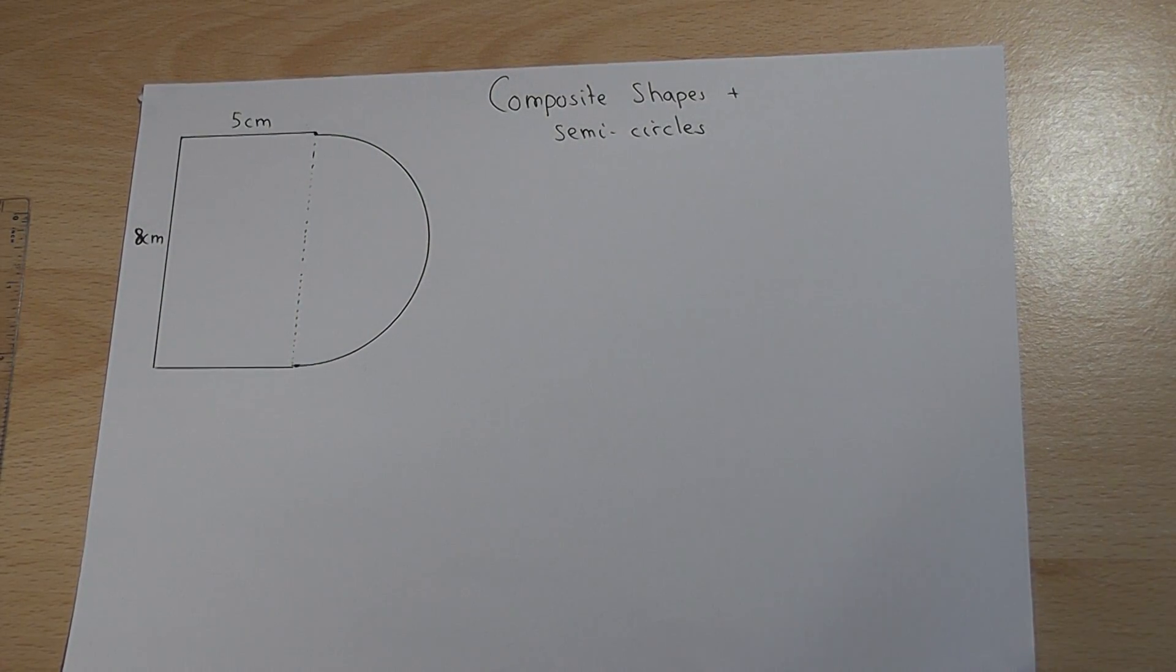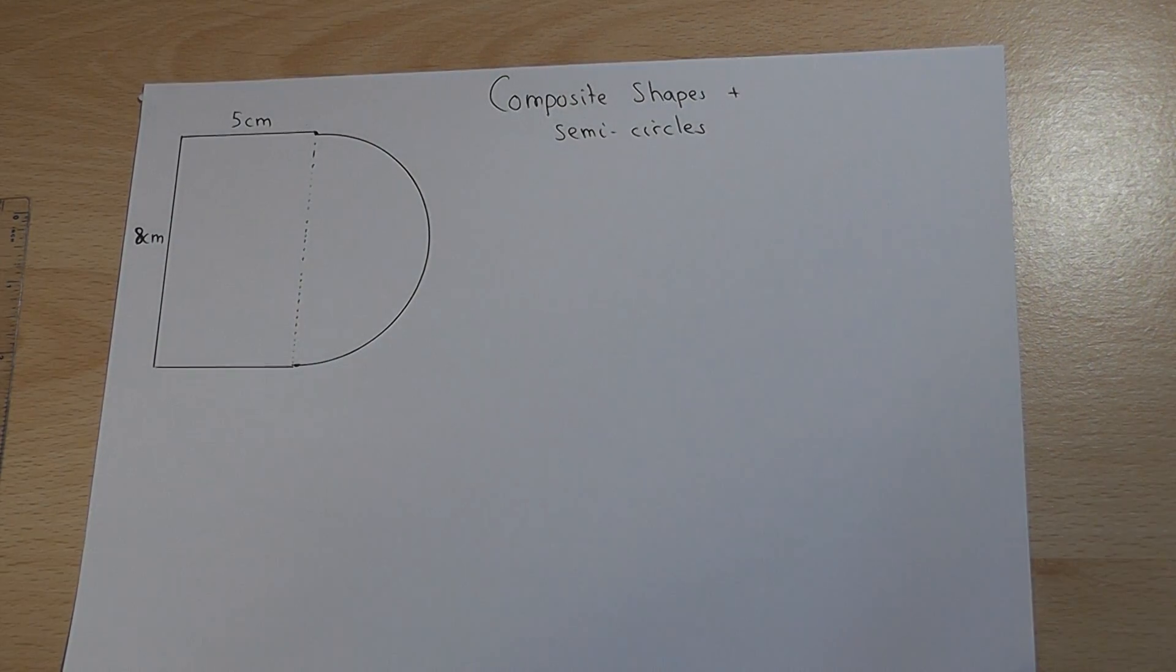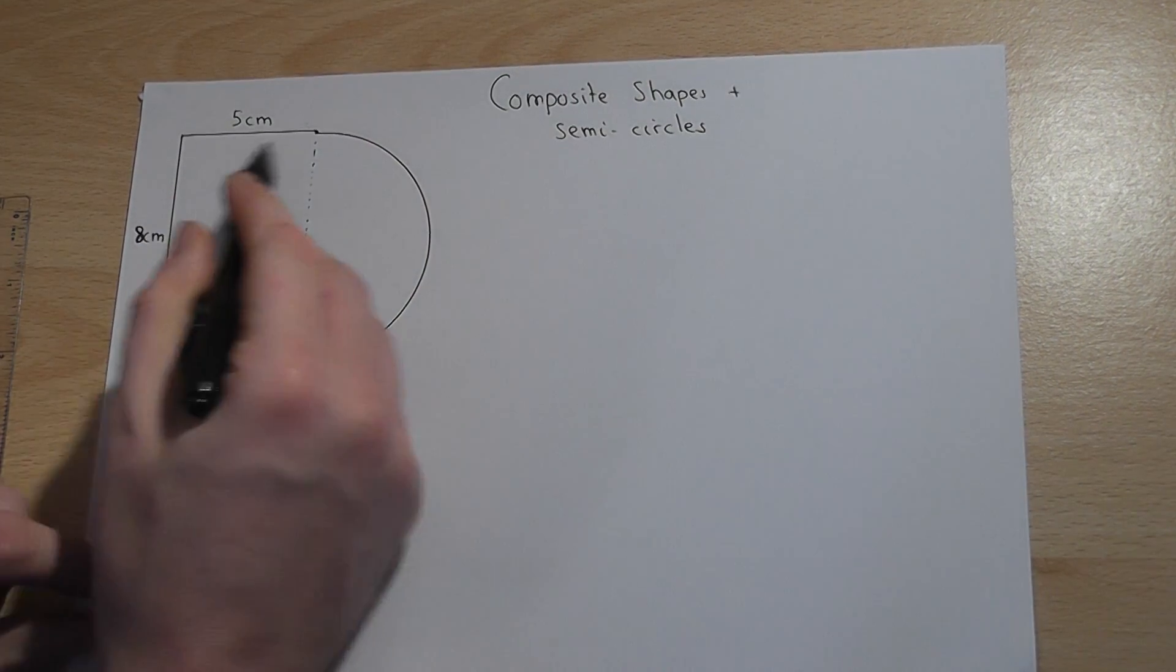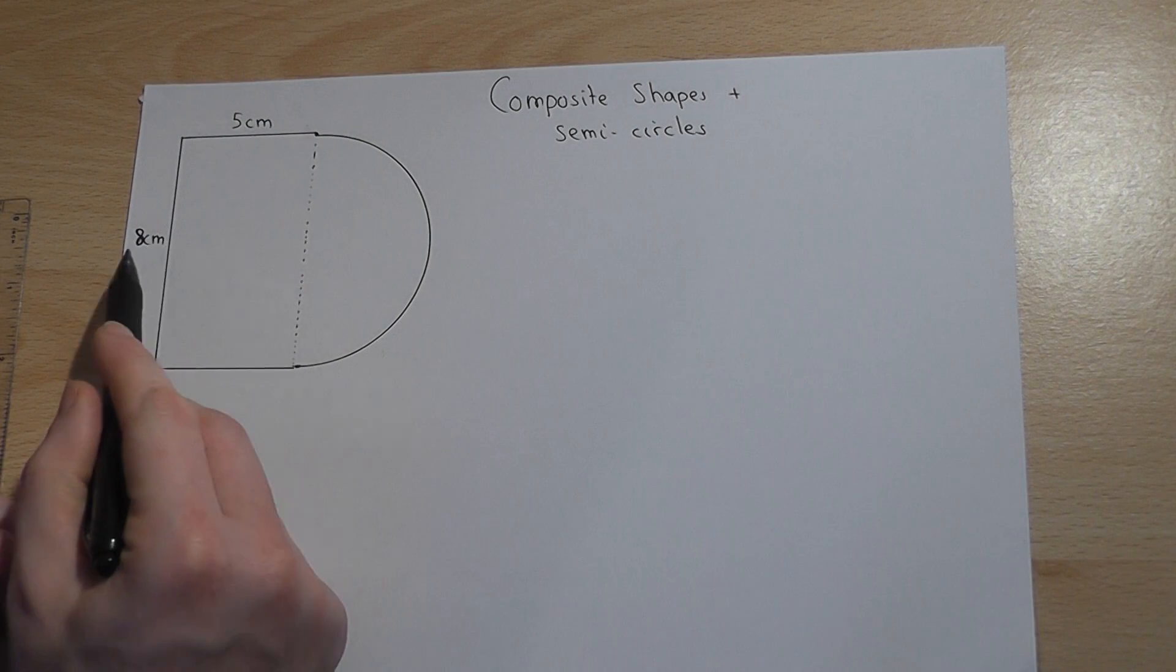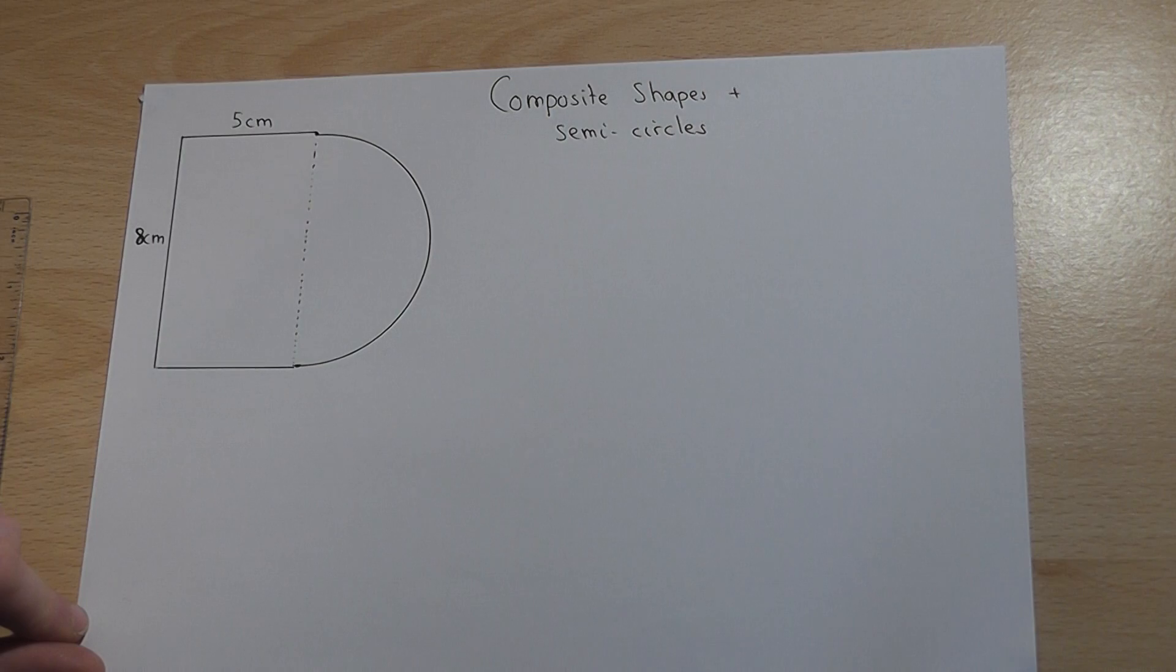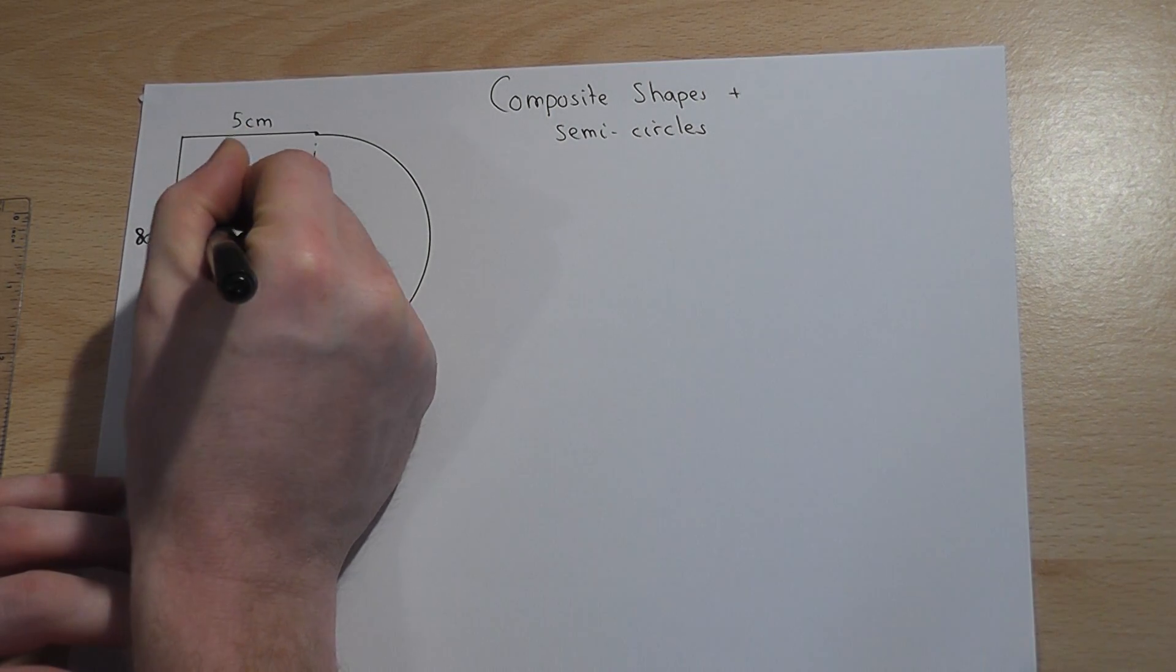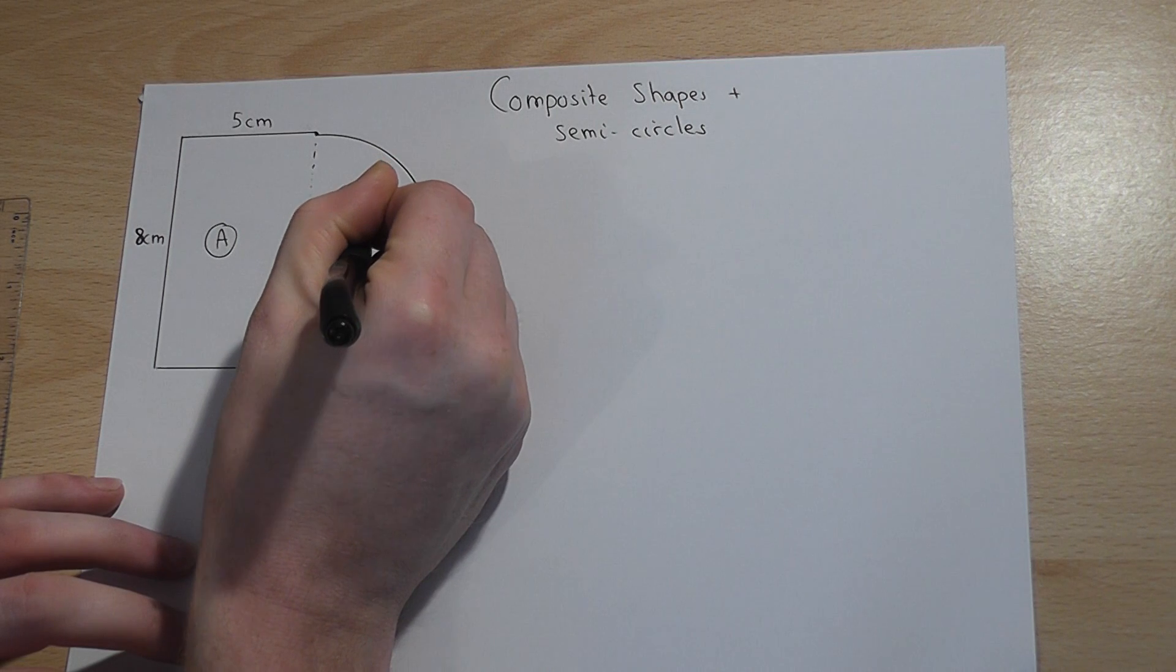Suppose you were asked to find the area of this composite shape which has a rectangle five by eight and a semicircle. To find the area we have to look at both parts separately.